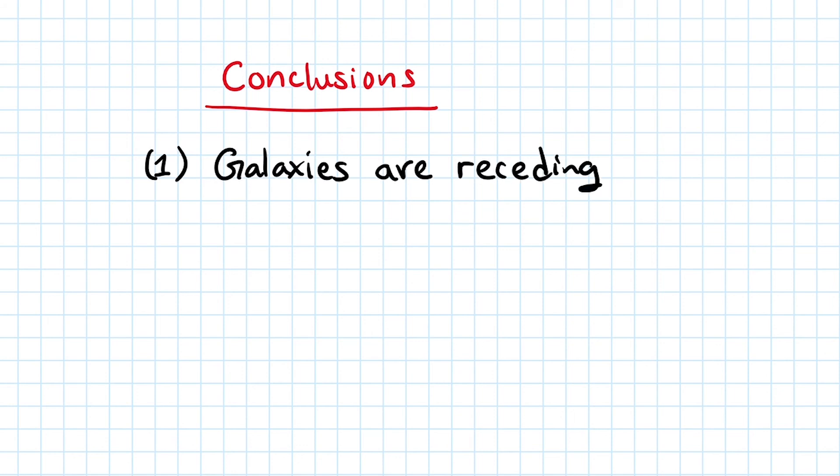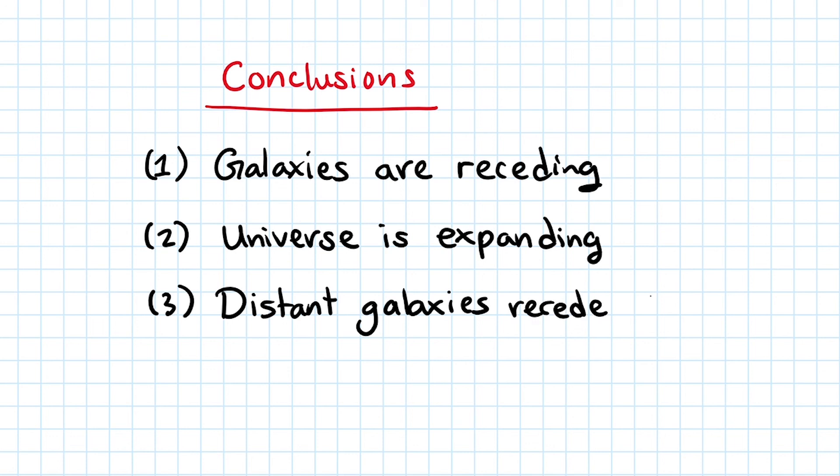So there are three main points that astronomers have concluded from analyzing the amount of redshift of galaxies. First, we know that galaxies are moving away from each other, or we can say that galaxies are receding—kind of like a receding hairline. Second point, the whole universe is expanding. And third, distant galaxies recede at a faster speed.